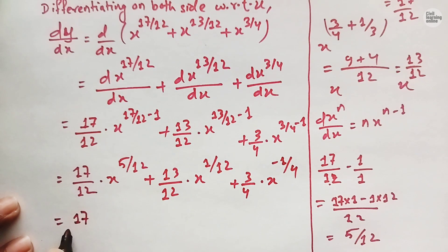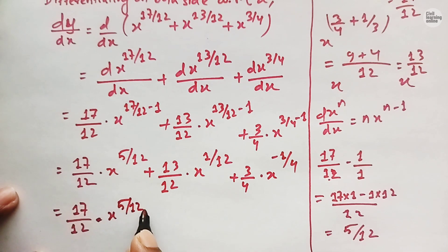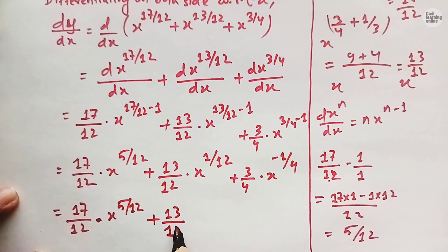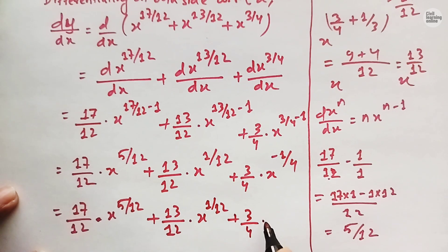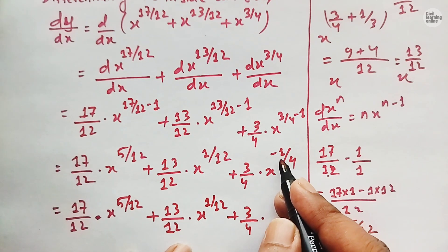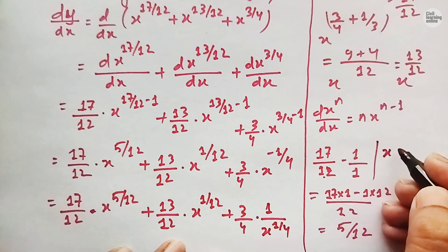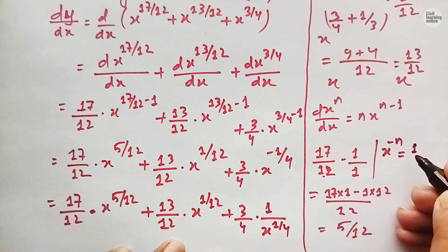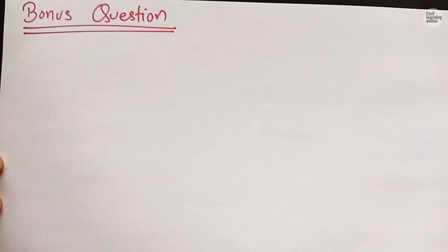So the answer is 17 upon 12 times x to the power 5 upon 12, plus 13 upon 12 times x to the power 1 upon 12, plus 3 by 4 times x to the power minus 1 by 4. You can also write x to the power minus 1 by 4 as 1 upon x to the power 1 upon 4, using the law of indices: x to the power minus n equals 1 by x to the power n. You can leave your answer here or proceed one more step.